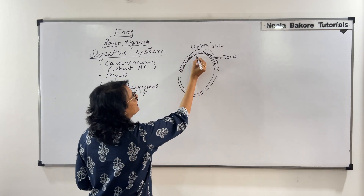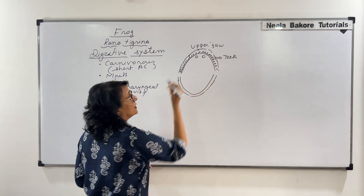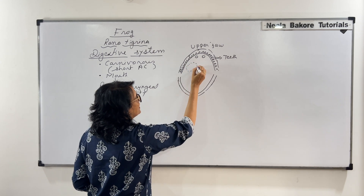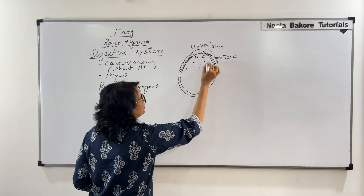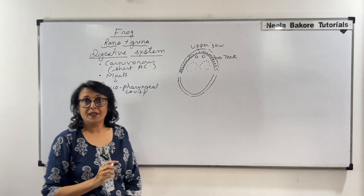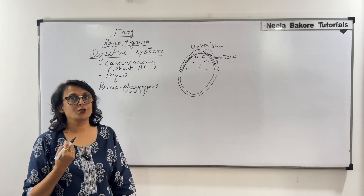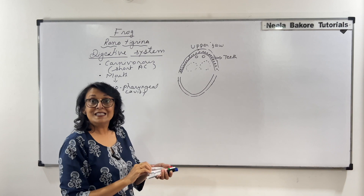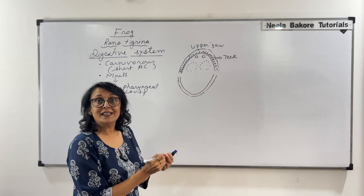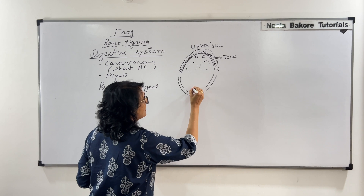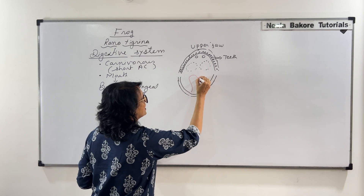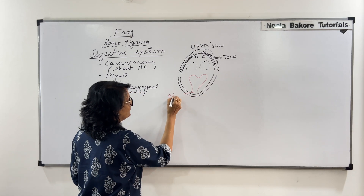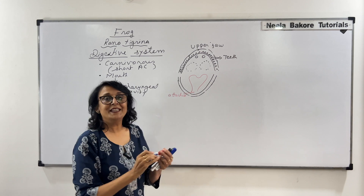When we look inside, we see those tiny openings of the nostrils, and we also see the depression of the bulging eyes — they bulge out as well as there are depressions on the inner side. On the lower jaw there is the tongue, and this tongue is anteriorly attached.